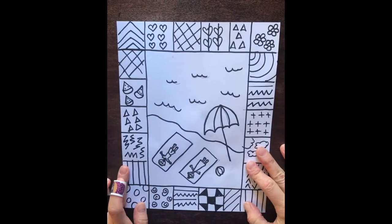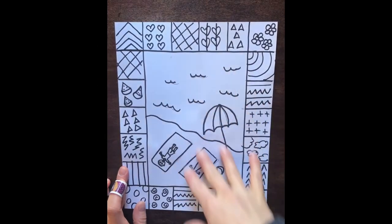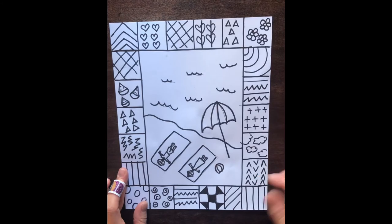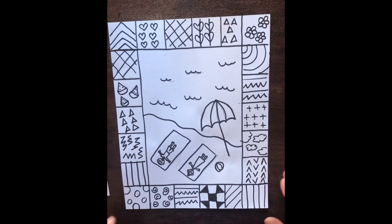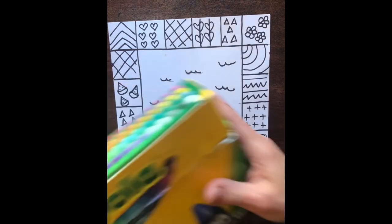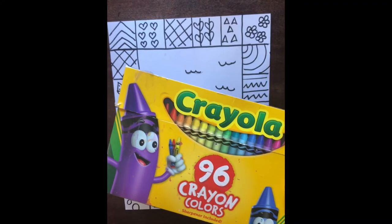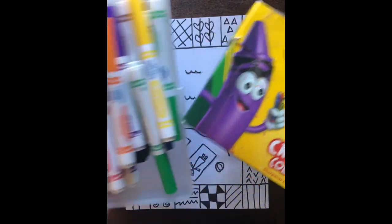Now that I have everything outlined in Sharpie, I have my simple idea of spending a glorious day on the beach, catching some sun and enjoying the ocean waves. I'm going to use a combination of crayons and markers to color my picture.